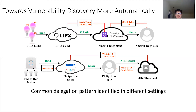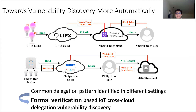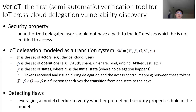Starting from the manually discovered Tuya case, we wanted to discover IoT delegation vulnerabilities more automatically. With the common delegation patterns identified across different IoT settings, we believe formal verification techniques can be applied here. Specifically, we designed VARIOT, which is, as far as we know, the first verification tool for IoT cross-cloud delegation vulnerability discovery. At a high level, we define the security property as: an unauthorized delegated user should not have a path to access IoT devices.